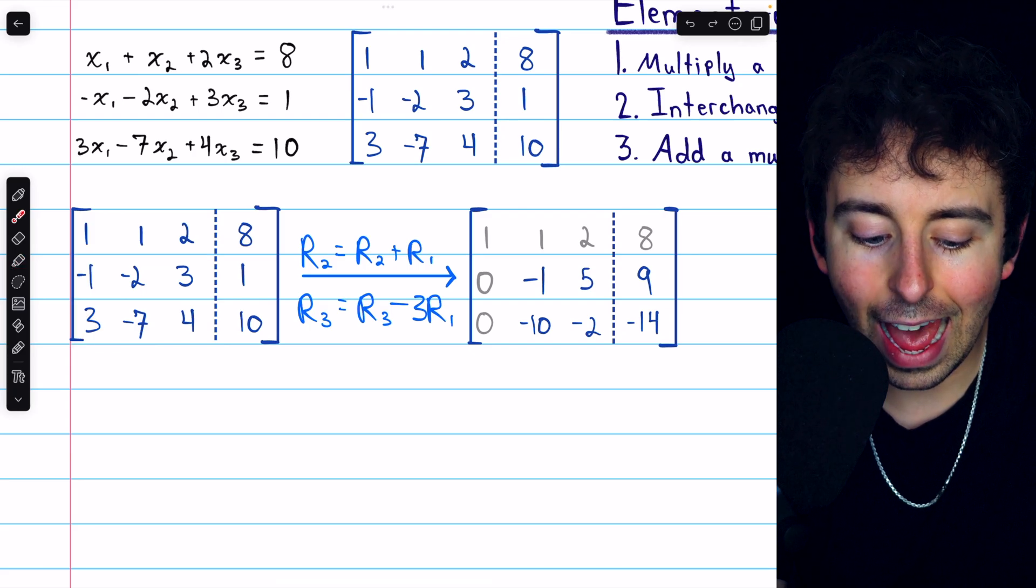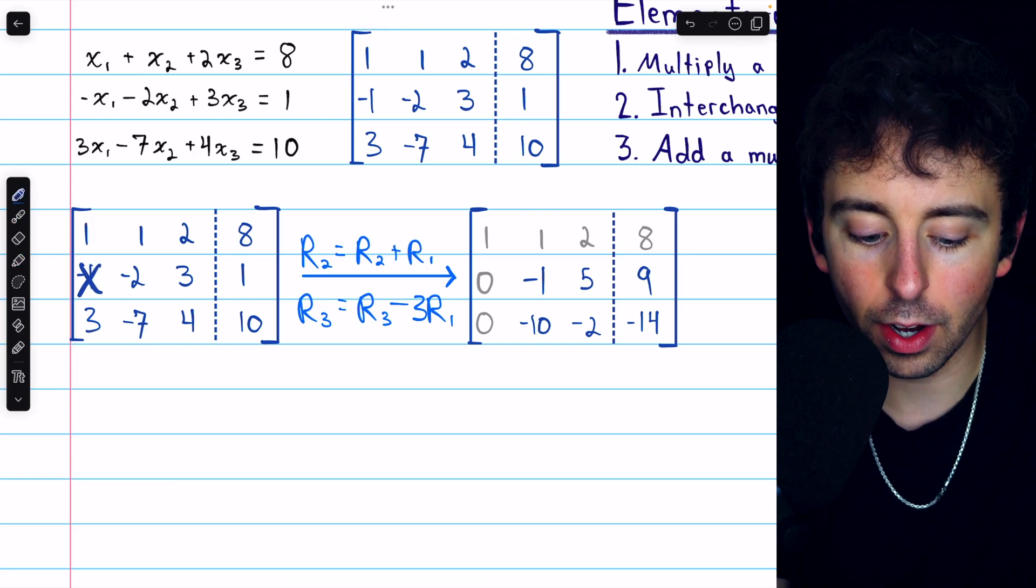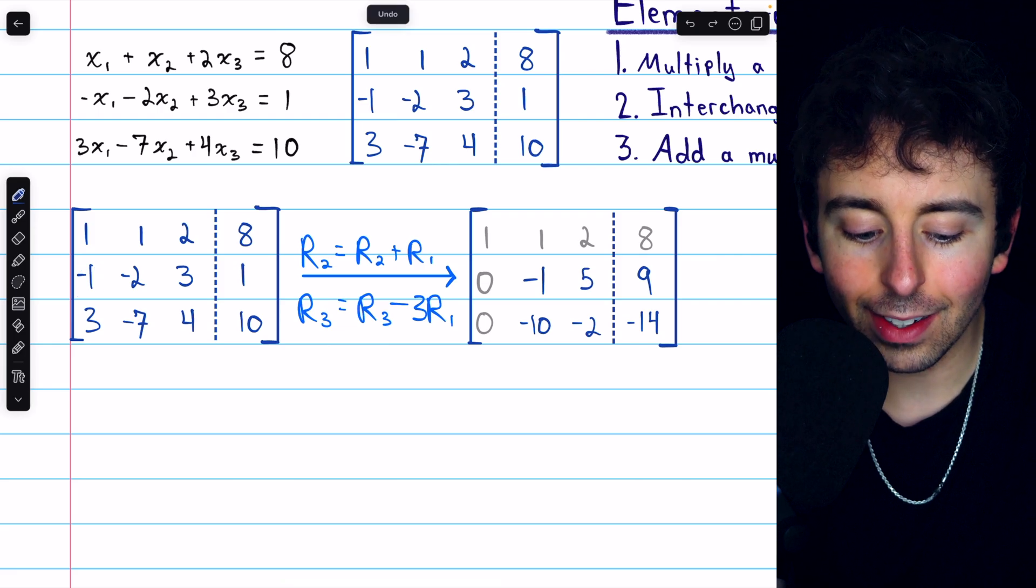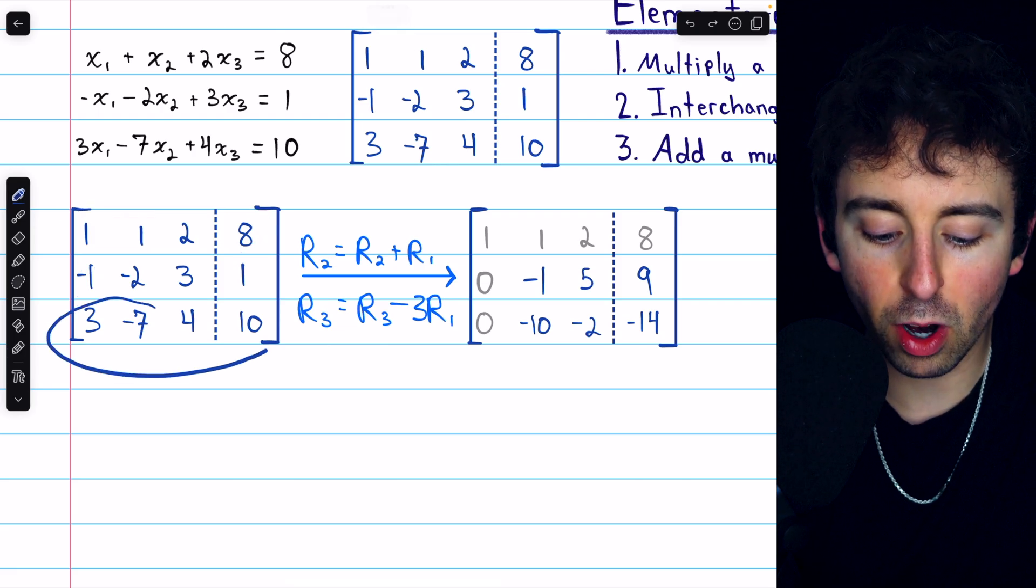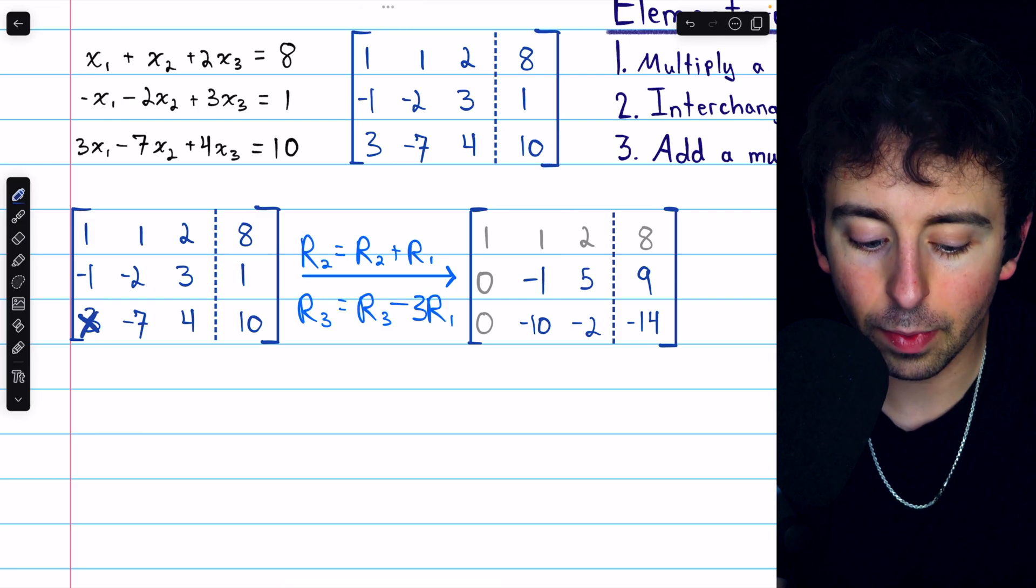So what we'll do is add row 1 to row 2—that will cancel out this negative 1—and then we'll subtract 3 times row 1 from row 3, and that will turn that 3 into a 0.